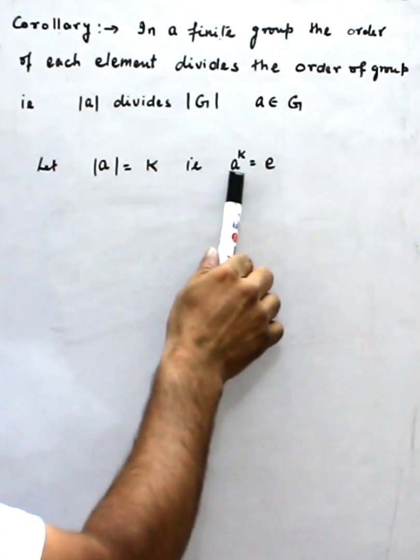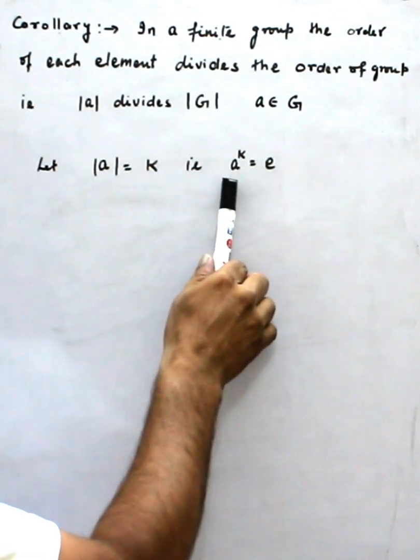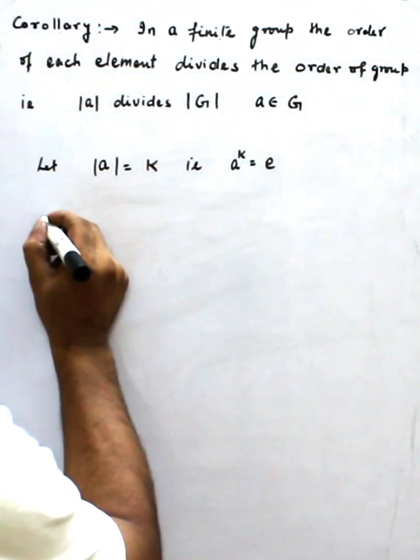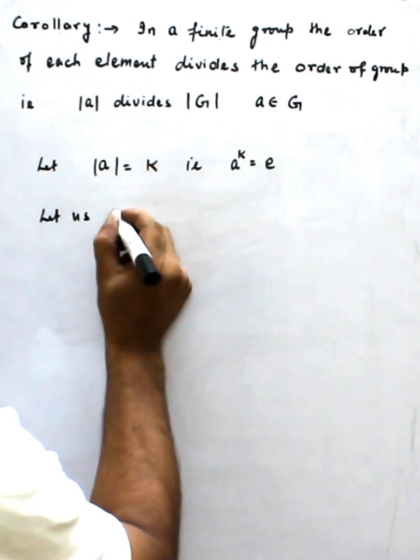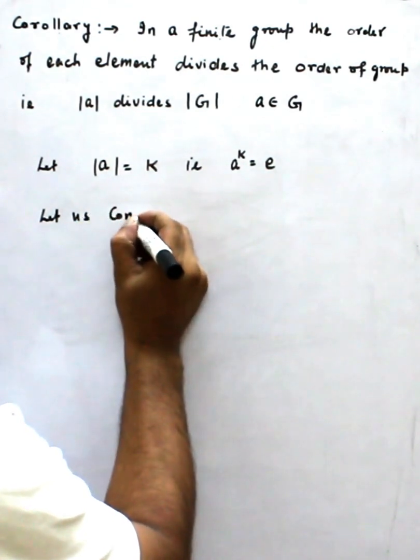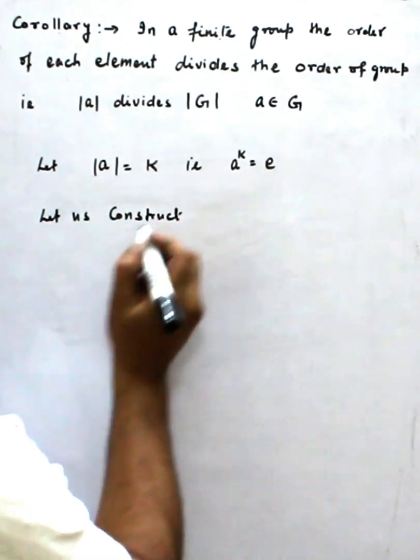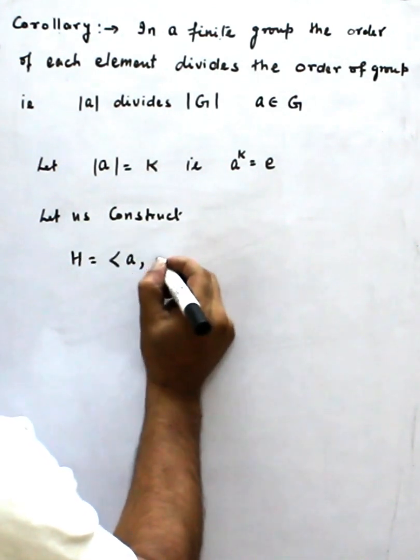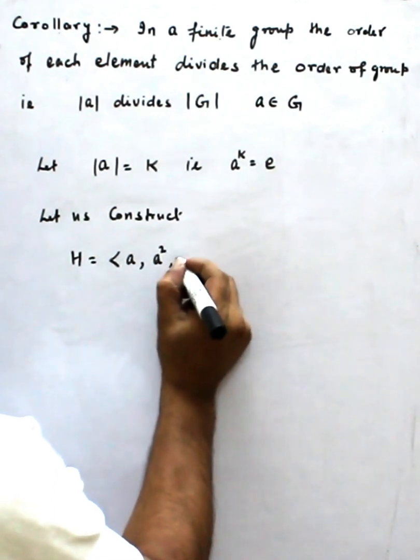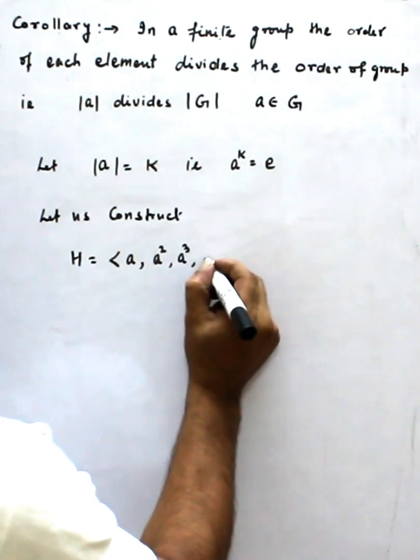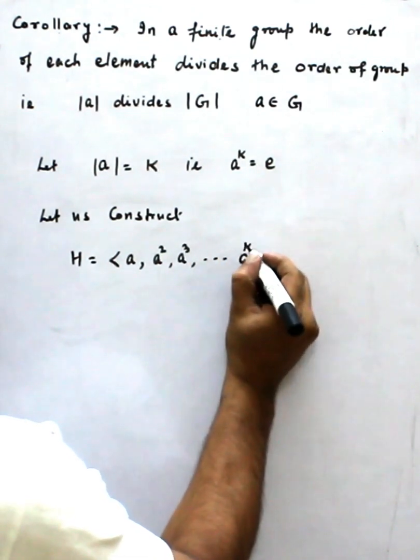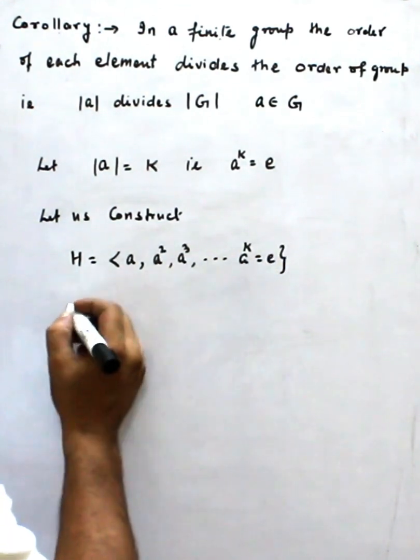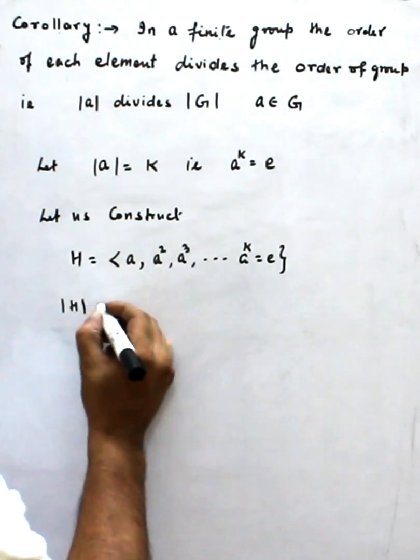This means no smaller power than K can make A identity. So let us construct H, a subgroup that contains the powers of A: A, A squared, A cubed, and the last is A to the K which is identity. So obviously the order of H is equal to K.